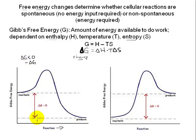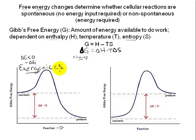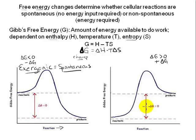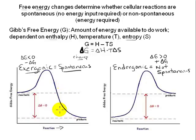Chemical reactions in which products have less free energy than reactants necessarily release energy, and are referred to as exergonic. On the other hand, if products have more energy than reactants, the change in free energy is positive — a positive delta G. That energy must be supplied from somewhere. Chemical reactions in which products have more free energy than initial reactants require an energy input and are referred to as endergonic. Exergonic reactions are characterized by a decrease in energy state and are therefore spontaneous. Endergonic reactions are characterized by an increase in energy state and are non-spontaneous.